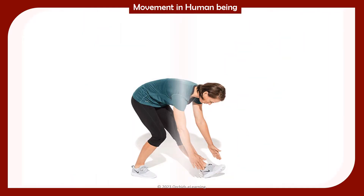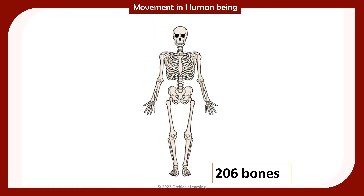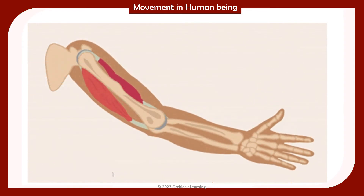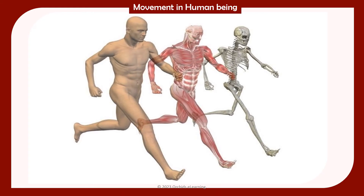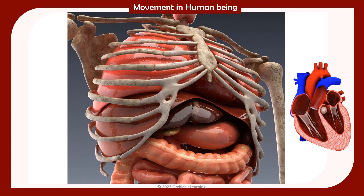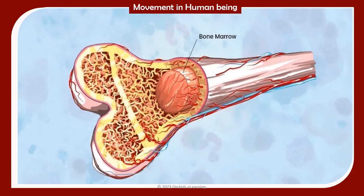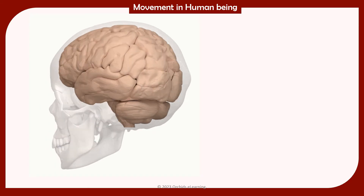Movement in human beings: The skeletal system along with the muscular system helps in movement. The human skeleton is made up of 206 bones. Its functions include: helping in the movement of various body parts, providing shape and support to the body, and protecting the soft internal organs. Bones are filled with a substance called marrow that produces blood cells.